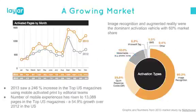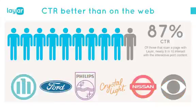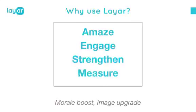If you look at what kinds of activation people use, image recognition — the category Layer falls under — accounts for over 60% of usage, making it the largest category. And from our own numbers, once people scan, over 87% actually interact with the interactive print content. That's very impressive compared to, say, web banners. If you get people to scan, you get so much more engagement.